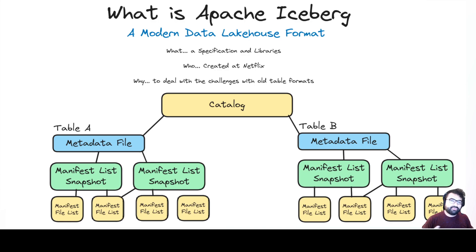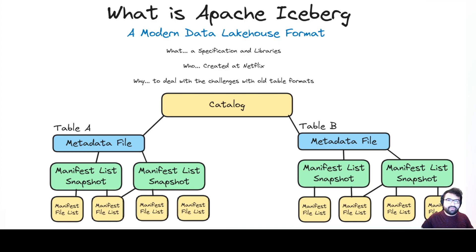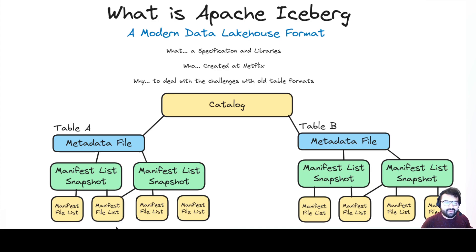The manifest list also has partition stats and other stats on those groups of files, so right there we can start doing partition pruning — saying this group of files is not needed for this query, reducing the number of files to scan and increasing query speed. Once you've narrowed down which manifests are relevant, you go down to the manifest level, which lists the individual files with metadata on each one. Based on that metadata you can skip all irrelevant data files and only scan the ones that actually contain records relevant to your query. These manifests can also be reused from snapshot to snapshot instead of being rewritten every time.